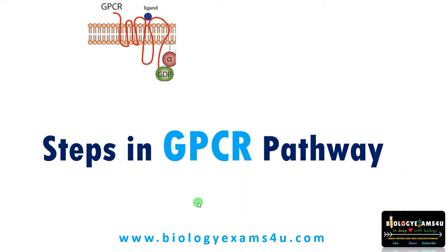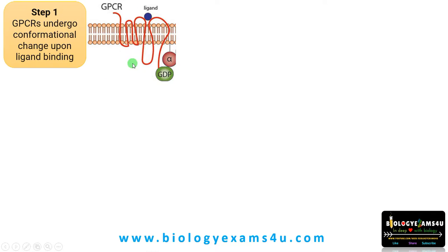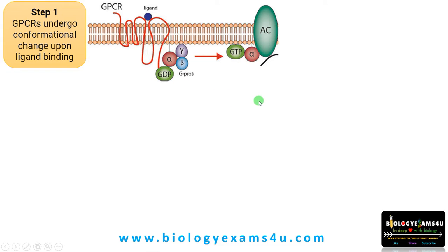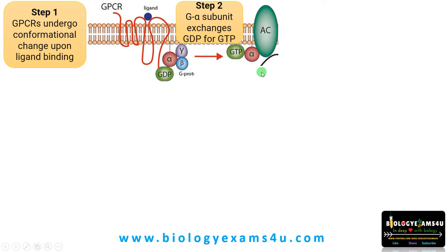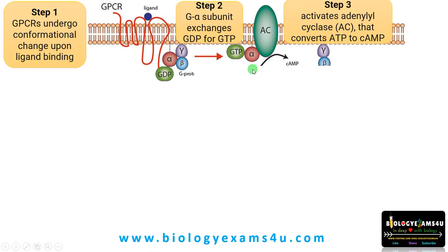Now let us see the GPCR pathway. The first step is ligand binding on the extracellular ligand-binding region. GPCR undergoes a conformational change upon ligand binding. The second step is this GDP-bound alpha subunit exchanges GDP for GTP, meaning it becomes active or in the on state. The third step is this active G-protein activates adenylyl cyclase, an enzyme that converts ATP to cAMP.